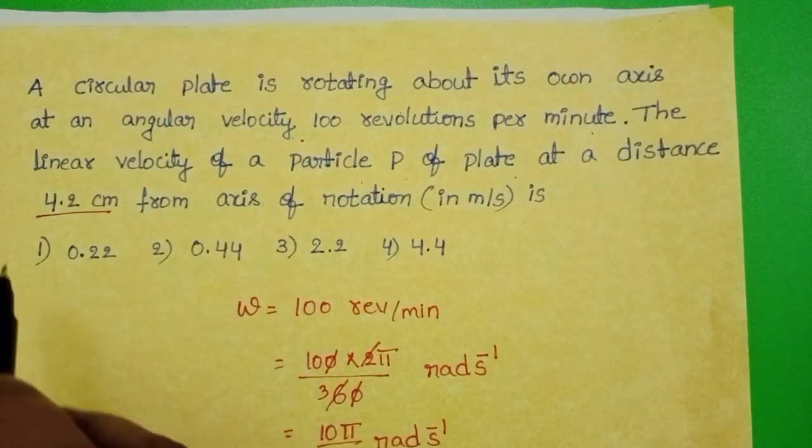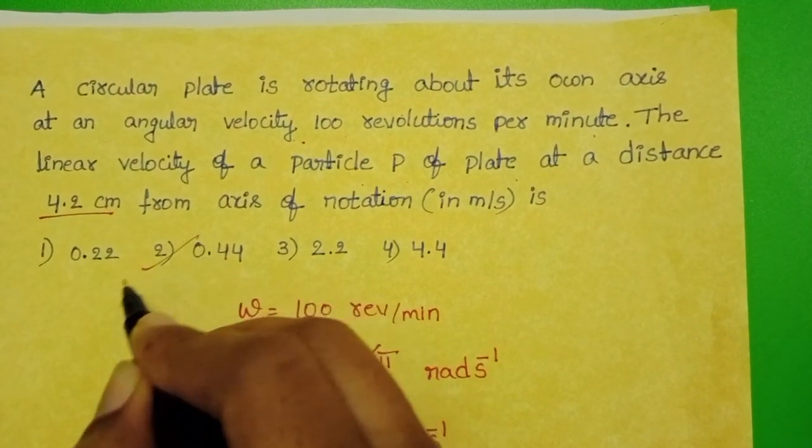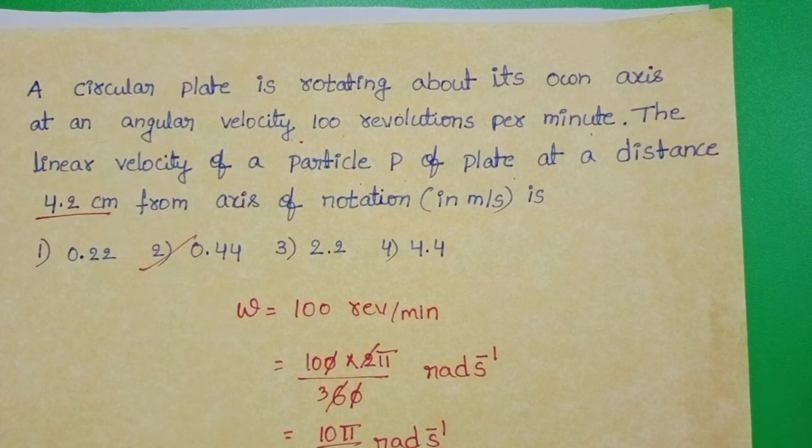Linear velocity of the particle at a distance of 4.2 cm is 0.44 meter per second. Second option is correct.